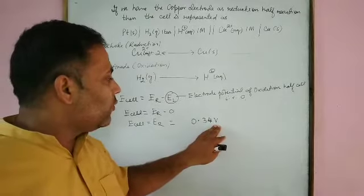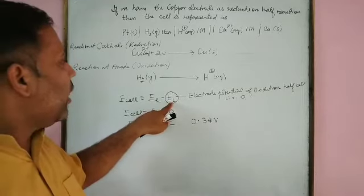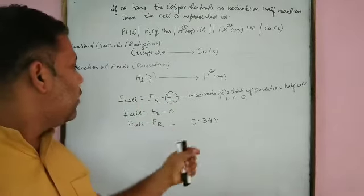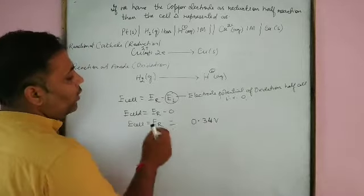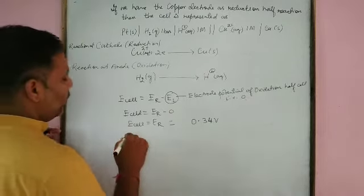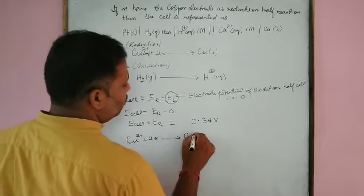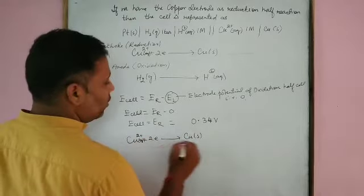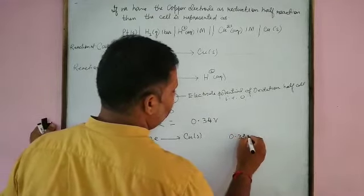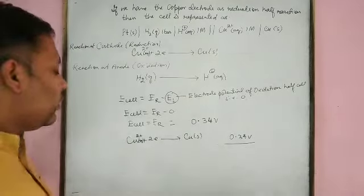We have a cell potential of 0.34 volt. The anode half cell reaction is the hydrogen electrode whose potential is zero. Therefore, the reduction of Cu²⁺(aq) + 2e⁻ → Cu(s) has a reduction potential of 0.34 volt. Next, if we have the zinc electrode, we need to determine its potential in the same way.